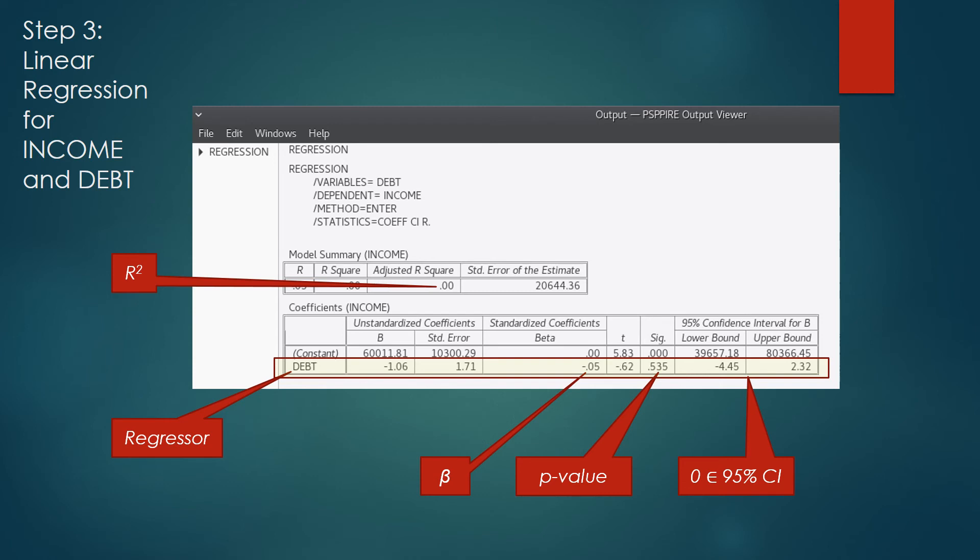Also, you can check out the p-value and see that it is way bigger than 0.05. Therefore, we cannot reject the null hypothesis, or we fail to reject the null hypothesis, and we find that we do not have a significant regressor.